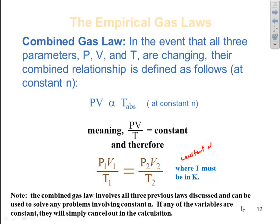If you have constant volume, you get P1 over T1 is equal to P2 over T2 — Gay-Lussac's Law. At constant pressure, V1 over T1 is equal to V2 over T2 — Charles's Law. So all your equations are right here at your fingertips; you just take out the constant.